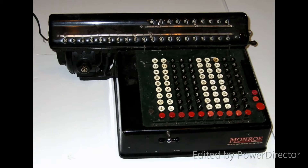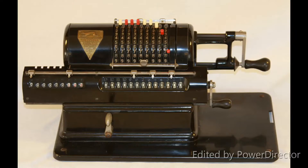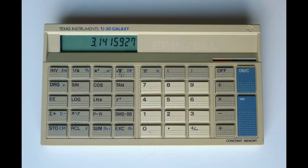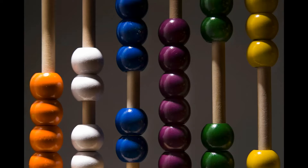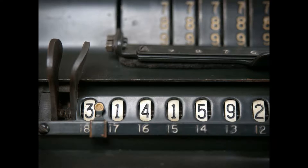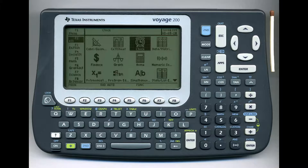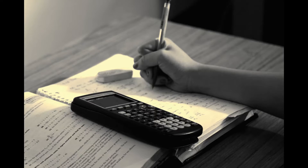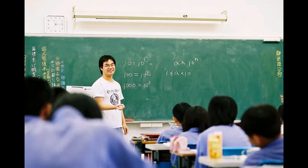Since ancient times, humans have used several different methods of measurement and calculation. Some of the most notable are the abacus, the Pascaline calculator, the mechanical calculator, and the graphing calculator. All of these have the same function — doing math. However, what separates each invention is the depth and breadth of the math that can be done.